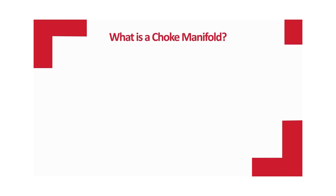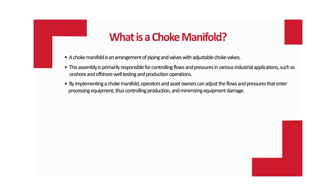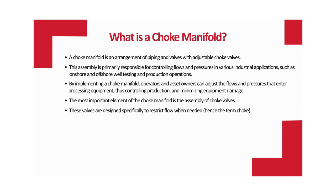What is a choke manifold? A choke manifold is an arrangement of piping and valves with adjustable choke valves. This assembly is primarily responsible for controlling flows and pressures in various industrial applications, such as onshore and offshore well testing and production operations. By implementing a choke manifold, operators and asset owners can adjust the flows and pressures that enter processing equipment, thus controlling production and minimizing equipment damage. The most important element is the assembly of choke valves, designed specifically to restrict flow when needed — hence the term choke.